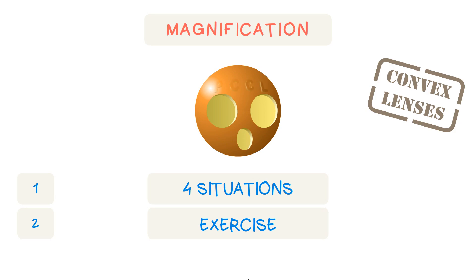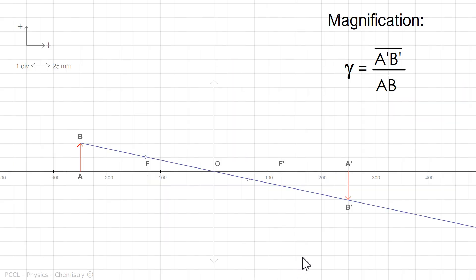Hello, ECCL channel greets you. Two words here on the notion of magnification, gamma, which is the ratio of the size of the image to that of the object, in algebraic value.